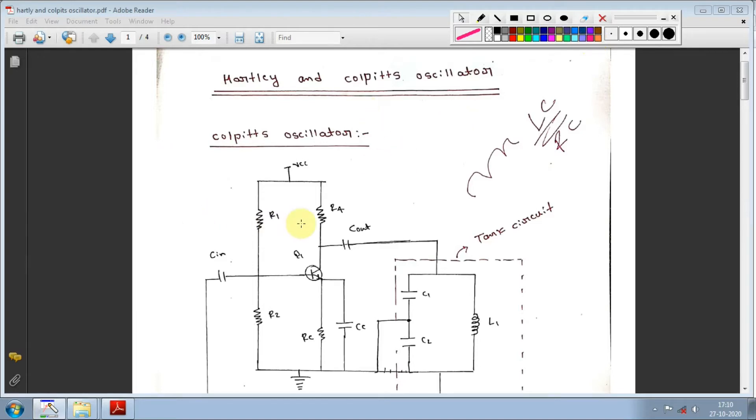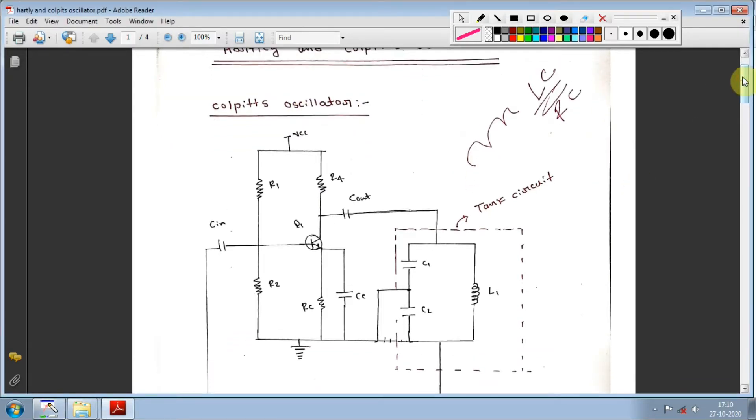First, let's discuss the Colpits oscillator. The circuit diagram is important. In Colpits oscillator, two capacitors are connected in series, and one inductor is connected in parallel. This combination is called a Colpits oscillator. Here you can see an amplifier circuit design with a tank circuit connected as a Colpits oscillator.